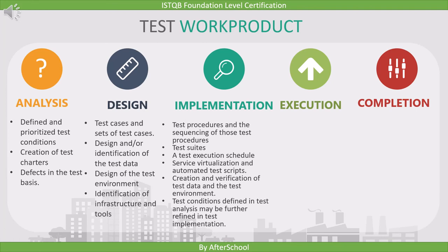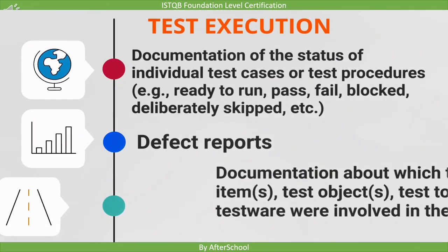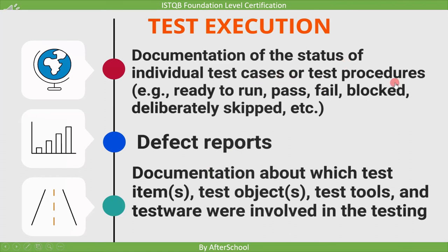Now let's see the work products of test execution. The first output is documentation of the status of individual test cases or test procedures — since test cases are run here, we document how many are ready to run, how many passed and failed, how many didn't execute, and how many we didn't execute deliberately. The second output is a defect report: test cases are executed, the expected result is compared with the measured result, and if they differ, a defect is reported. The third output is documentation of which test items, test objects, test tools, and testware were involved in the testing, stored so they can be referenced again if needed.